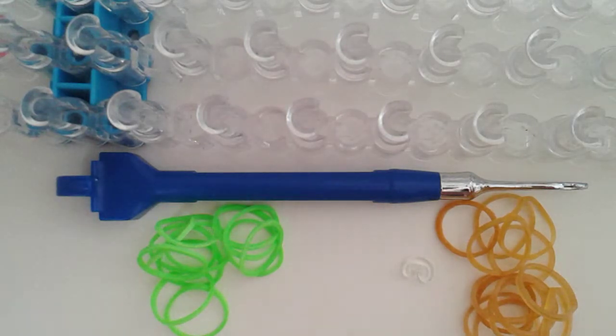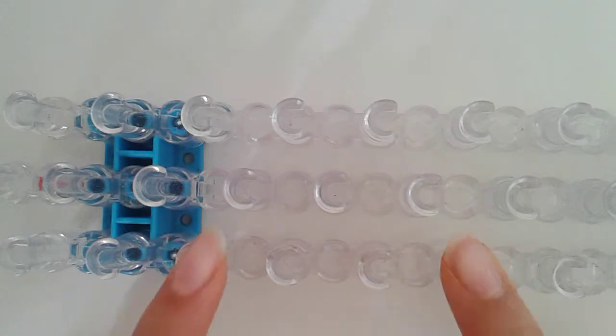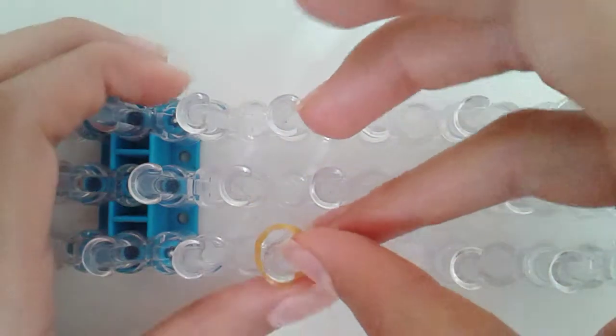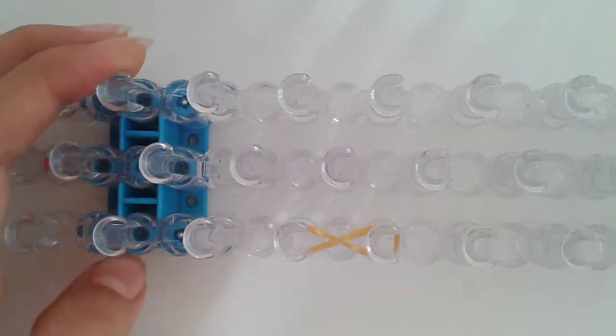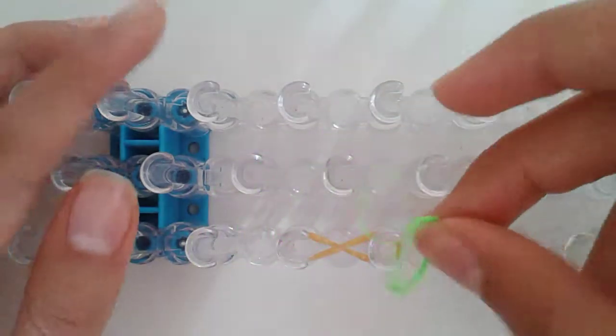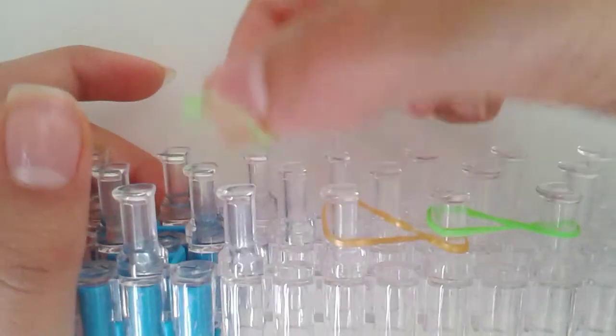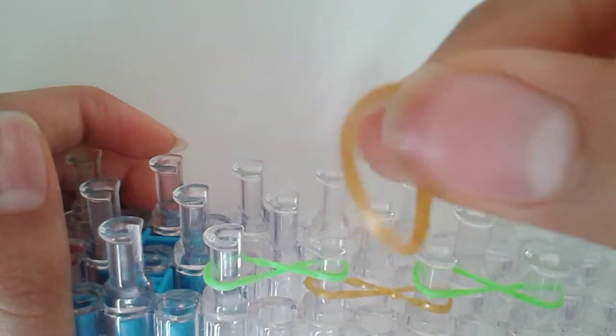Let's get started. Today you'll be using only four pegs or pins. You'll be taking one single rubber band, placing it here like that, and taking another one. By the way, you can use as many colors as you like. I'm using only two.